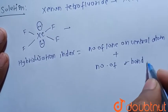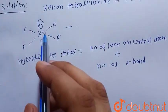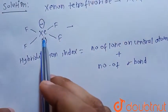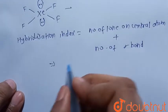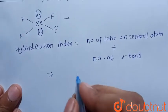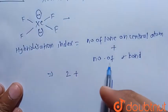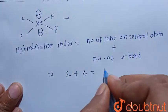Number of sigma bonds formed by central atom with the atoms attached to the central atom. So the hybridization index would be: number of lone pairs on the central atom is two, and number of sigma bonds is four, so this equals six.